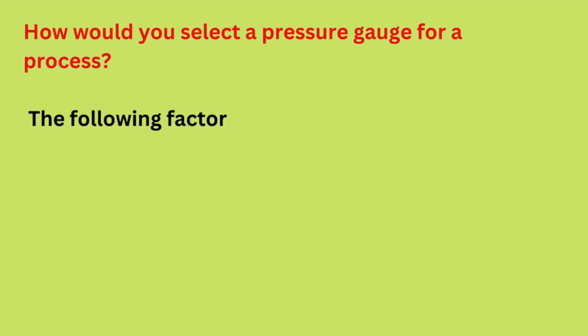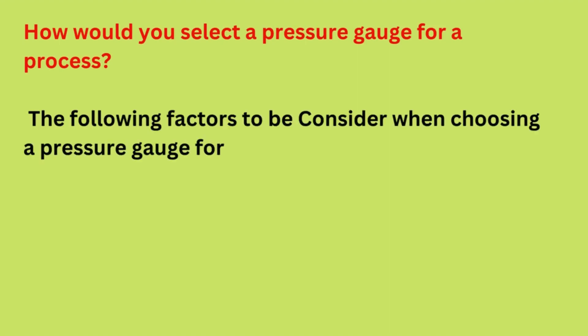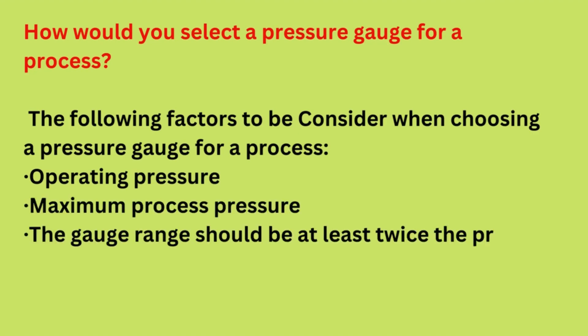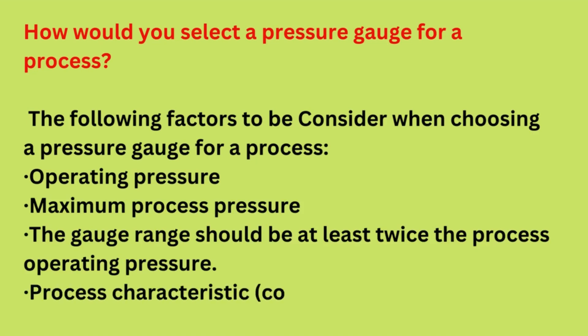How would you select a pressure gauge for a process? The following factors should be considered when choosing a pressure gauge: operating pressure, maximum process pressure — the gauge range should be at least twice the process operating pressure — and process characteristics such as whether the fluid is corrosive or non-corrosive.